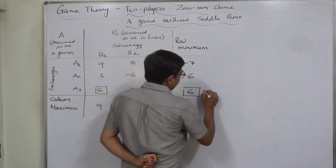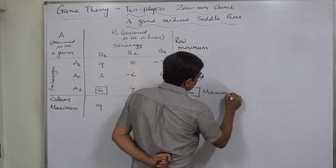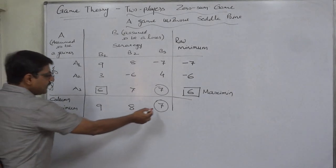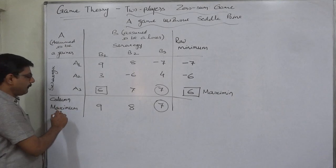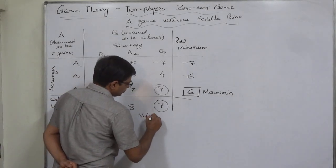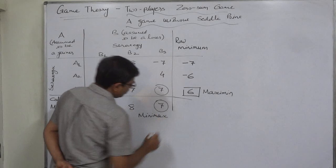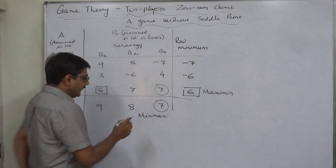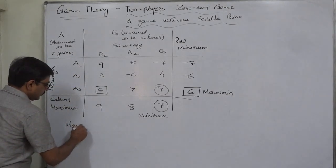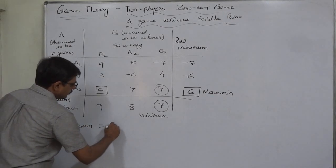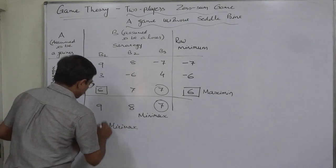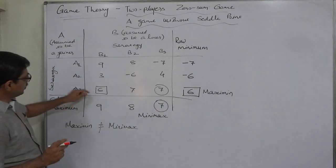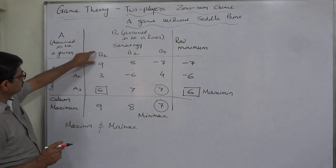The maximum value among the row minimums is known as maximin — the short form of maximum of the minimum. On the other hand, the minimum value from among the column maximums is known as minimax — the short form of minimum of the maximum. Is this a situation where maximin equals minimax? No — the maximin value is 6, situated at strategy A3 for A and B1 for B.